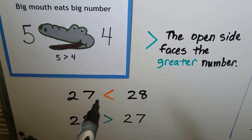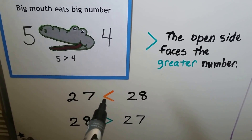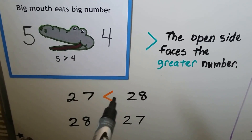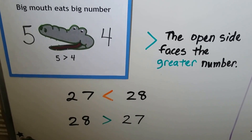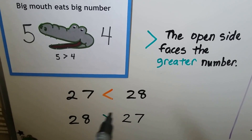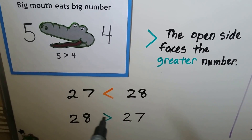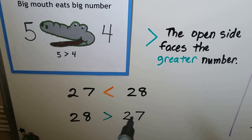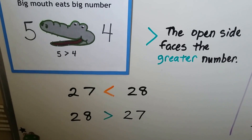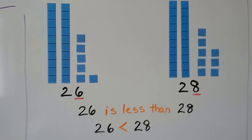27 is less than 28, so this tip is facing the smaller number and the open part is facing the larger number. 28 is greater than 27 — the open side is facing the larger number and this little tip is facing the smaller number.